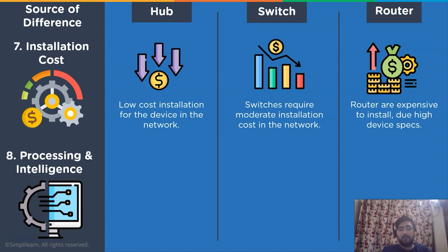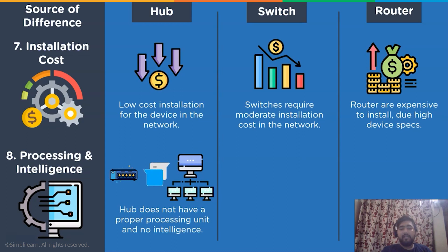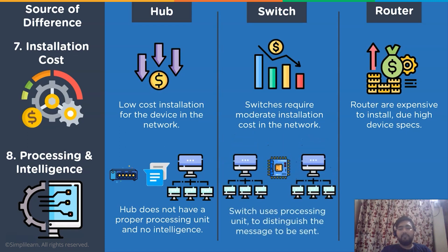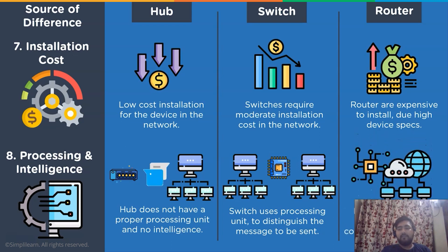The next difference is based upon processing and intelligence. A hub device does not have any processing unit or intelligence point and is the most basic point of data transmission. In the case of a switch, it possesses a processing unit to differentiate the destination address or source address in the header format of the message. In the case of a network router, it is the most sophisticated device among all three, as it performs the most complex queries and protocols in the network channel.